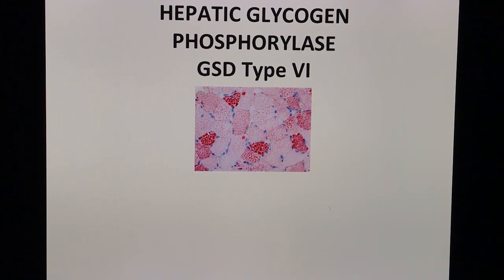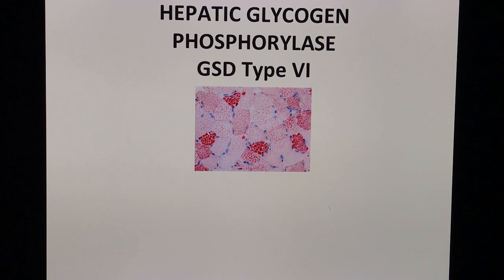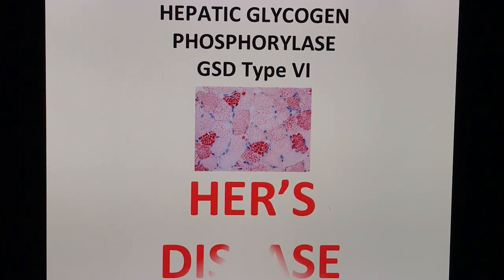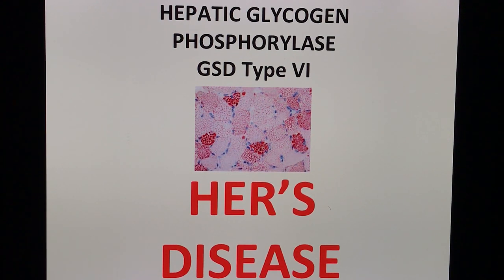Glycogen storage disease type 6: the enzyme deficient is hepatic glycogen phosphorylase, and this is called Hers' disease. A simple mnemonic: hepatic glycogen phosphorylase — the first letters are H-E-P, so 'hep hep hooray' — hepatic glycogen phosphorylase is Hers' disease.